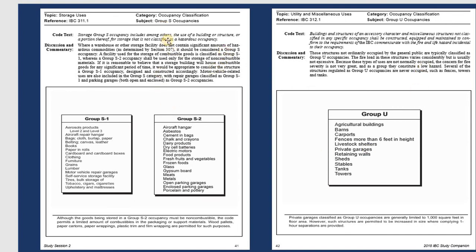Group S stands for Storage. You cannot live or sleep in a storage building — it is used for working and then left alone. It divides into S1 and S2. S1 covers books, paper, rolls, clothing, furniture, lumber, and vehicle repair garages. S2 covers cement, aircraft hangars, dairy products, dry cells, electric motors, food products, glass, and other construction materials.